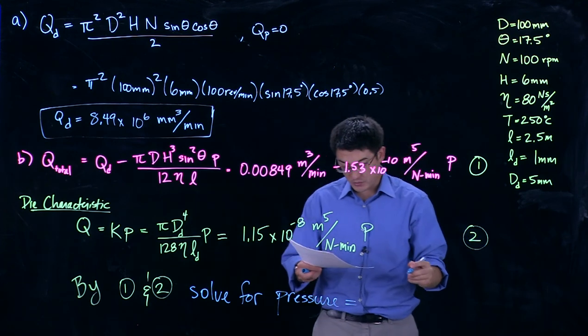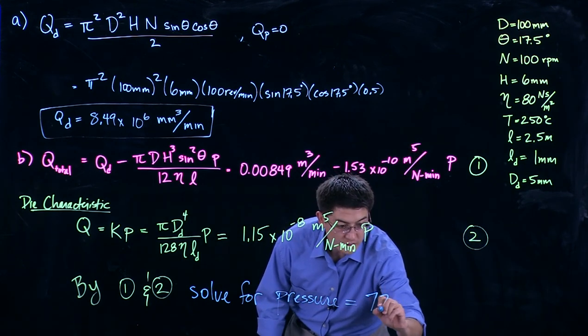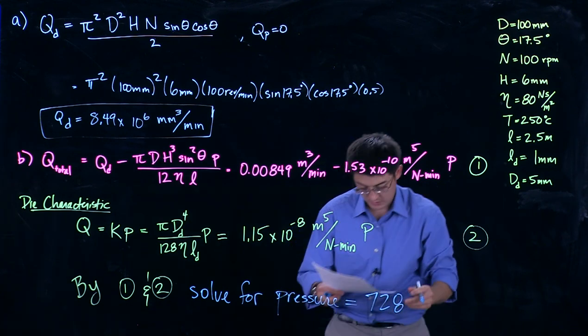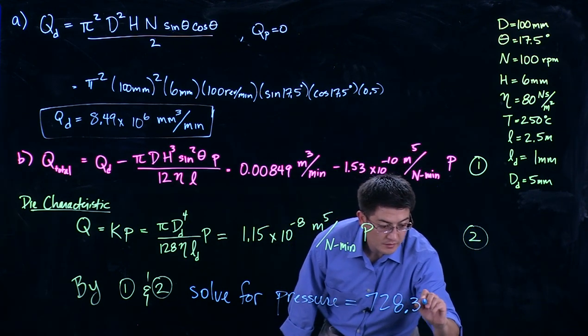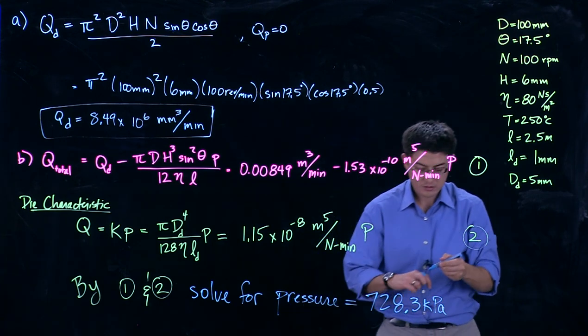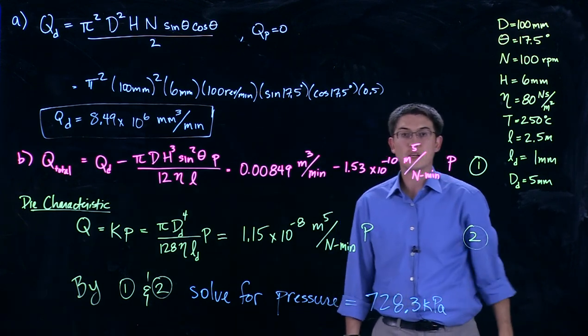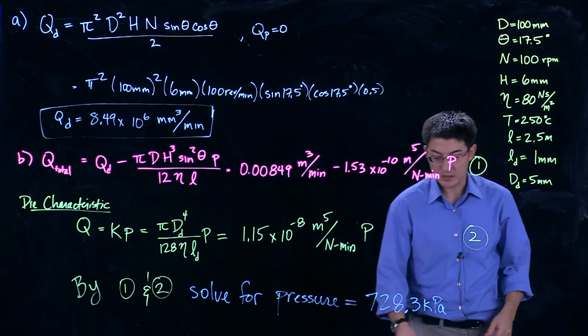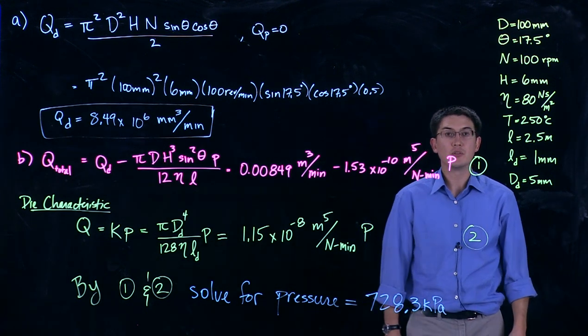So by doing that, I would get that pressure is equal to 728.3 kilopascals. It comes out to Newton per meter, which is Pascals, and you'll have 728,000 of those.